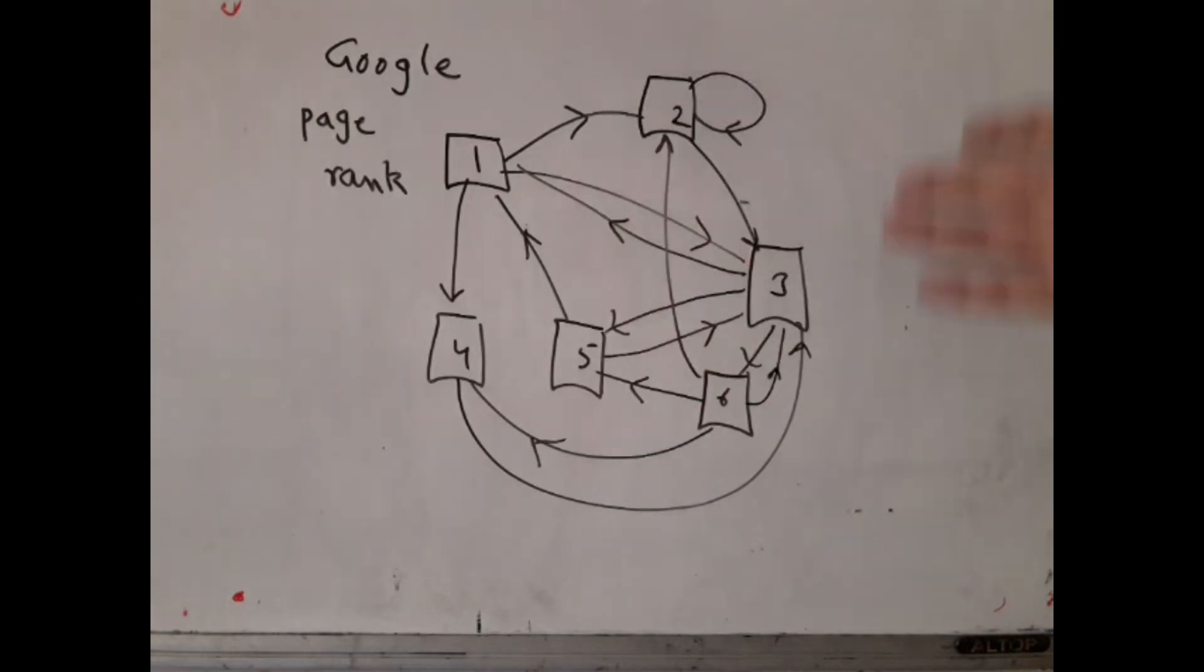So the question is, how do we actually decide? Now, the way Google thought about it, that was their first paper, that was their part of their thesis, was this. That suppose there is a random browser, or a guy who is just browsing randomly, and this random browser starts at some point.